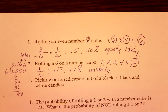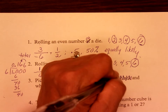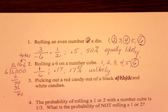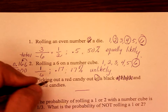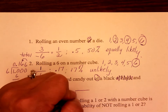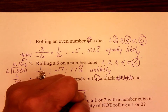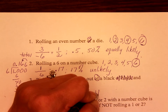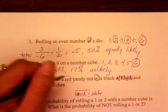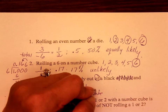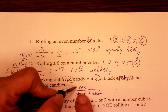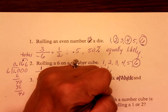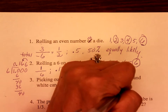Example three: pick a red candy out of black and white candy. Remember: 'is over of' — 'of' tells you the denominator. If you only have black and white candy, you cannot pick out a red candy. So this is 0 percent, which means it is impossible.